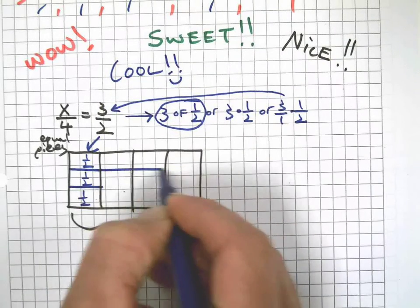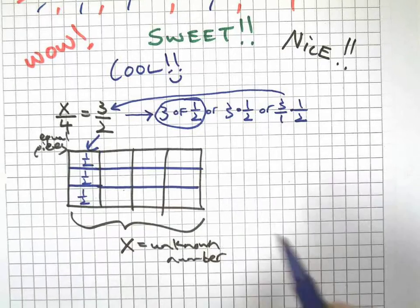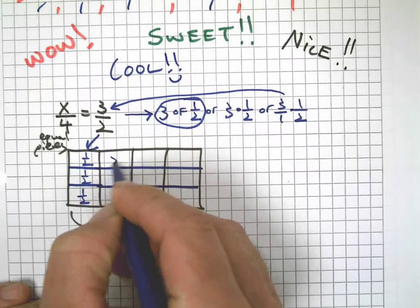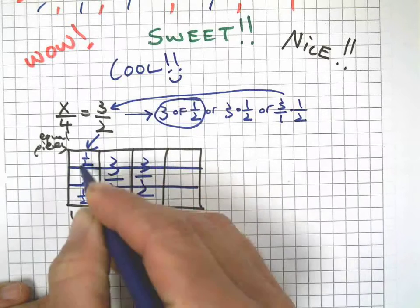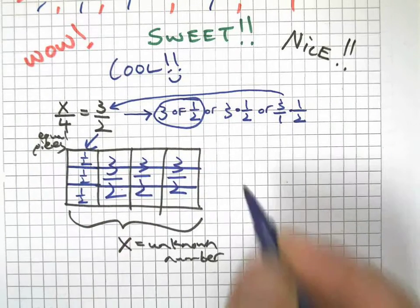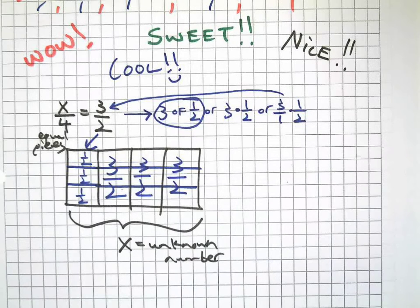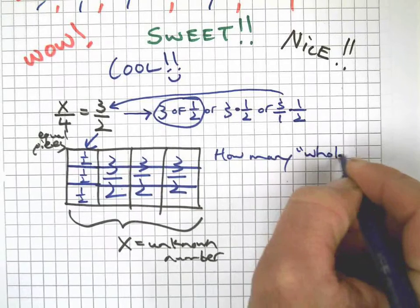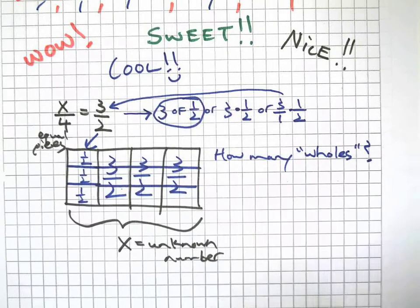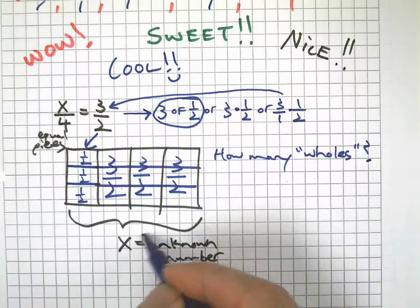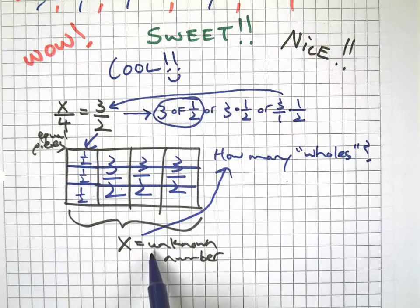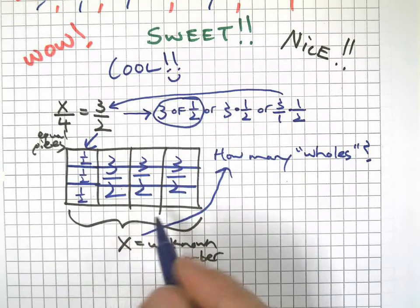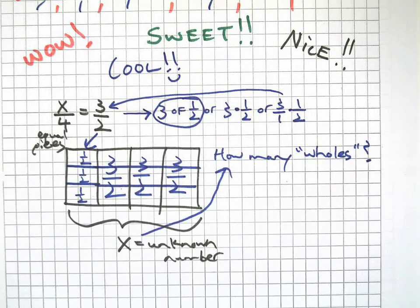We know that this thing X was split into four equal pieces, so therefore we have this going on. Since all the pieces are equal, we can split all of them into three halves, three pieces of one half each. And then if we add all these things up, how many wholes is that going to be? That's the answer to X.